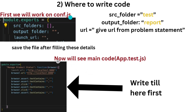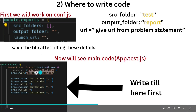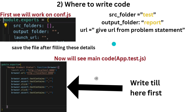First, look at conf.js. You will see src folder, output folder, and launch URL. For the src folder, enter 'test'; for the output folder, enter 'report' in lowercase. For the URL, copy it from the problem statement and paste it here. You can also type it manually: for example, 'http://...' — type it as shown. This covers the conf.js configuration.